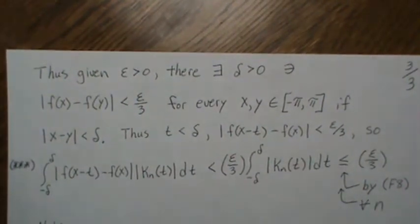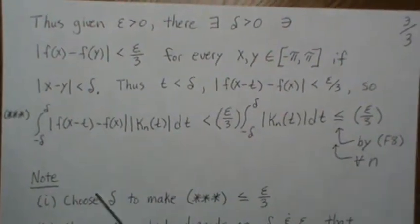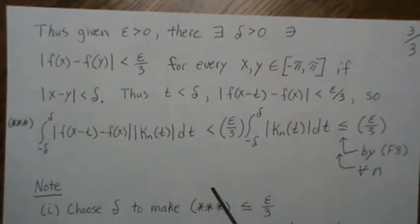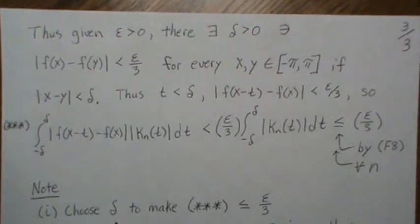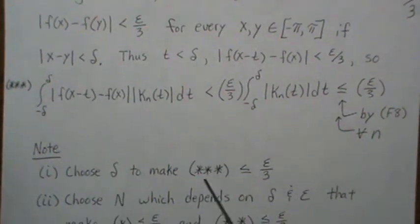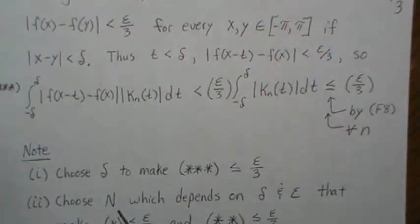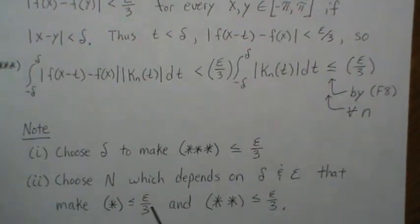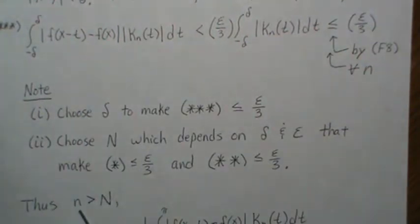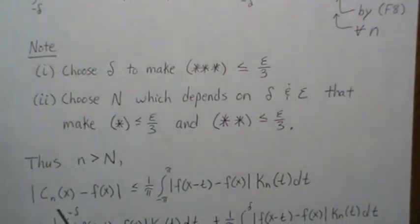Now, the steps to make everything work: given ε, we first choose δ using uniform continuity to make the middle integral small. Once we have δ and ε, we pick n large enough — depending on δ and ε — to make the 1-star and 2-star integrals less than ε/3 each. For any n bigger than this chosen N, the absolute value |Cn(x) − f(x)| is bounded by the sum of the three pieces.